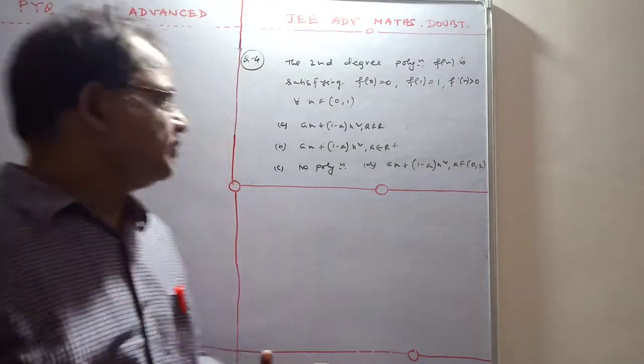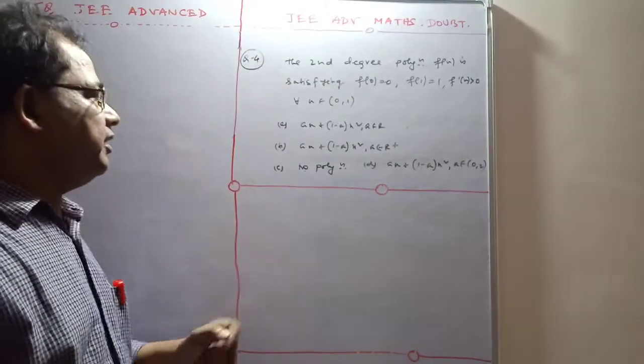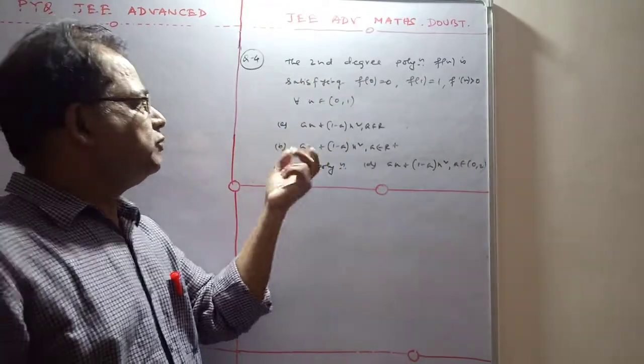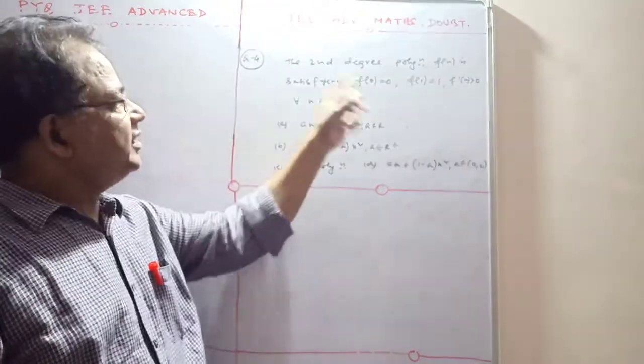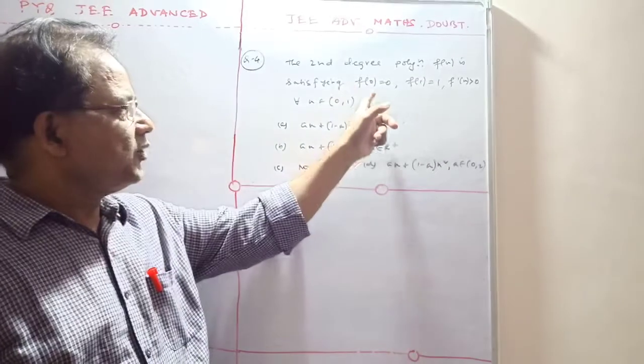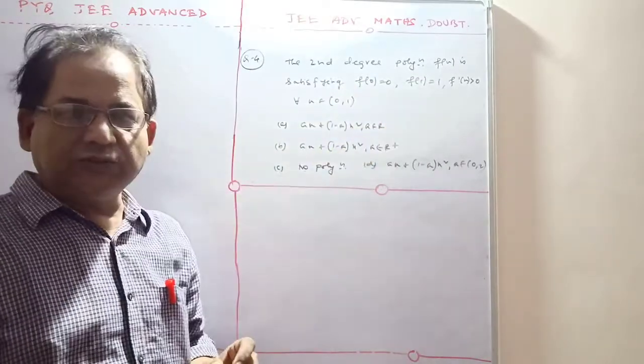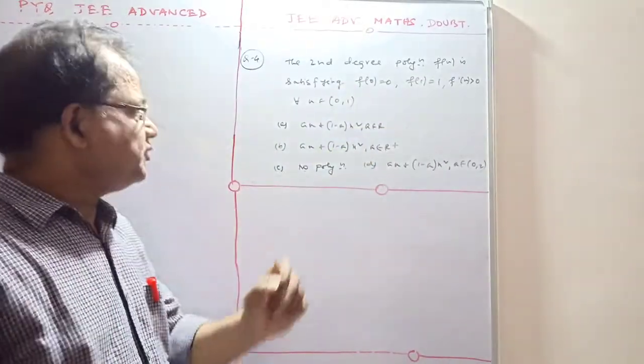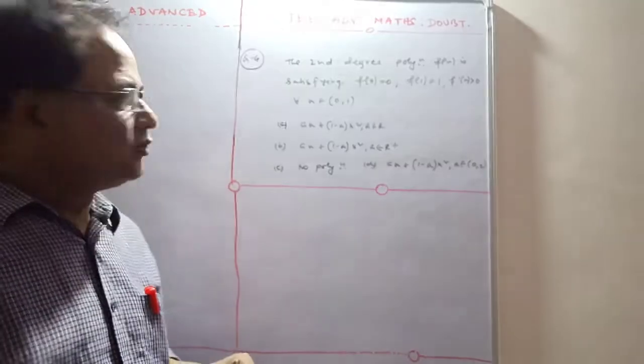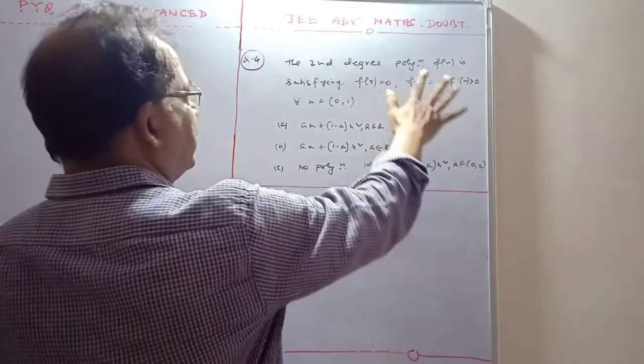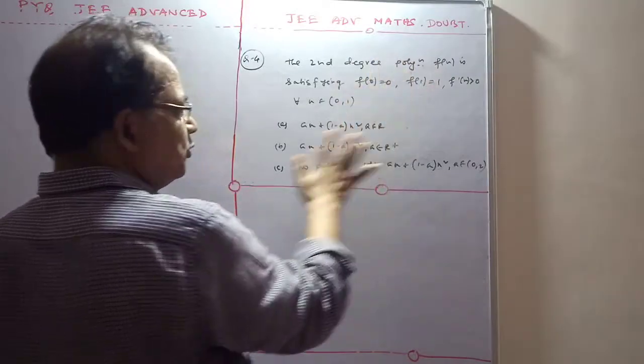Hello, good evening my dear friends. Your query is about a second degree polynomial f(x) satisfying f(0) = 0, f(1) = 1, and f'(x) is positive for every x belonging to [0,1]. Whenever these conditions are fulfilled...